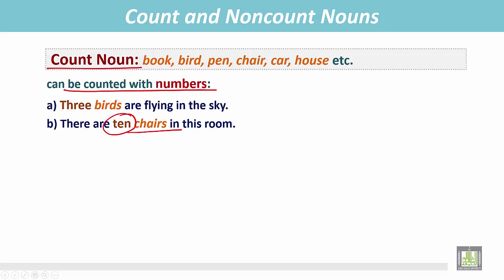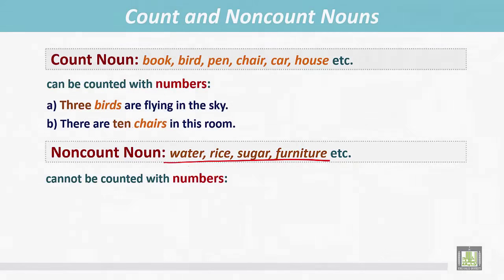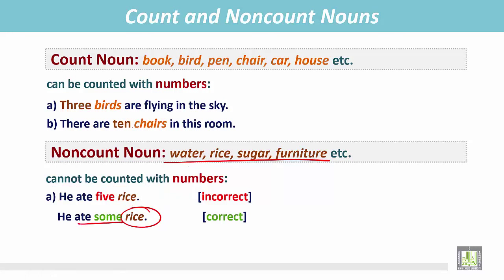Non-count nouns are like water, rice, sugar, furniture — these nouns cannot be counted with numbers. For example, 'he ate five rice' is incorrect because rice cannot be counted. The correct form is 'he ate some rice.' We can put 'some' before an uncountable noun.